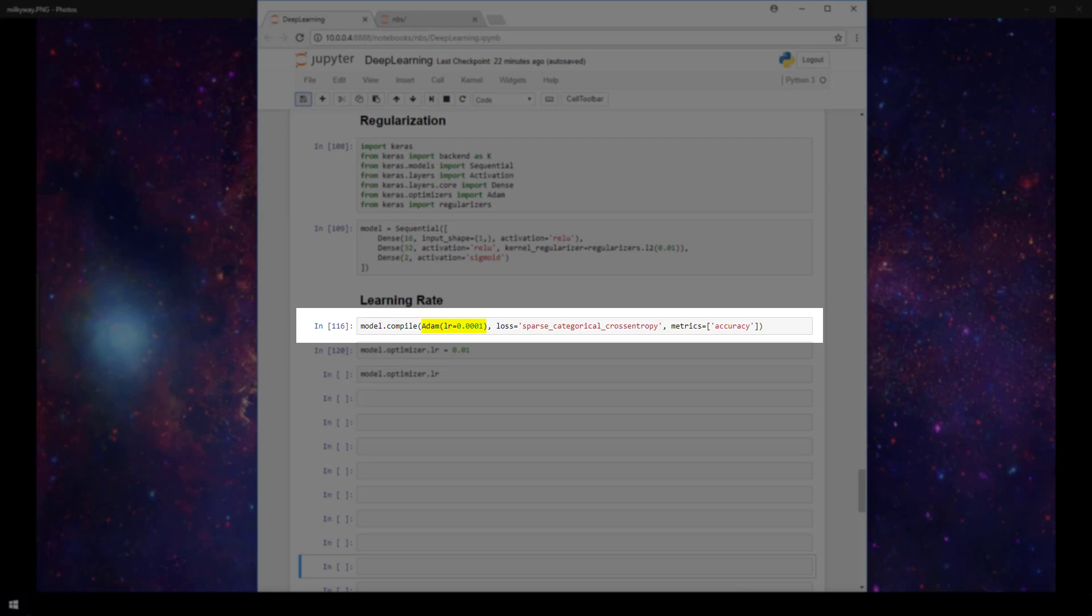To see what this default learning rate is, you'll just need to check the Keras documentation for the optimizer you're specifying. Now there's also another way we can specify the learning rate.